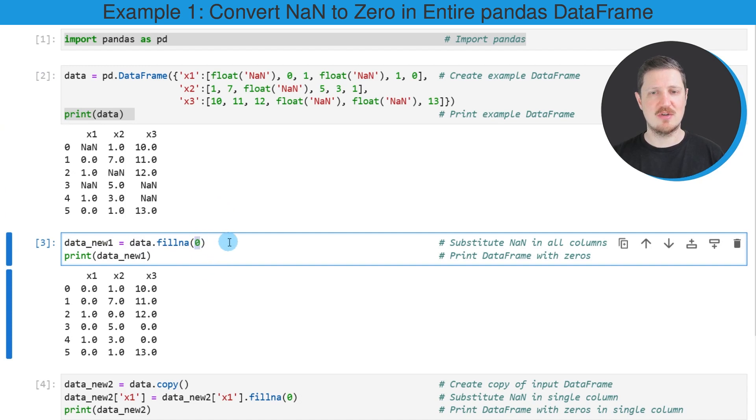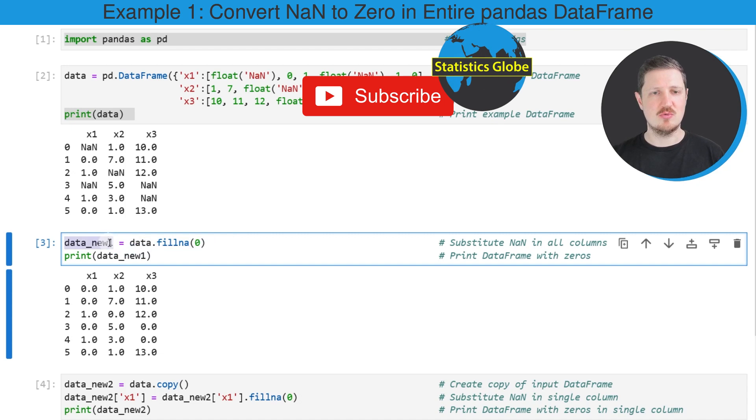Within the fillNA function, I'm specifying the value 0, because I want to replace the NAN values by the value 0. Then I'm storing the output of this in a new data frame object that I'm calling data new1.